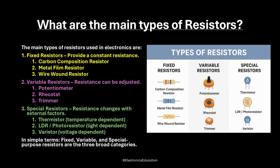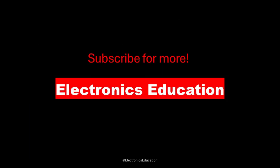Three, special resistors — these have resistance that changes with external factors. Examples are thermistors, which are temperature dependent; LDR or photoresistors, which are light dependent; and varistors, which are voltage dependent. In simple terms, fixed, variable, and special purpose resistors are the three broad categories. Subscribe to this channel for more such videos.